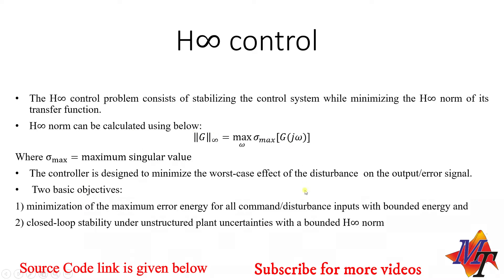For H-infinity control, the difference between H2 and H-infinity control is basically the norm used. In H2 we minimize the second norm of the transfer function, while in H-infinity we minimize the H-infinity norm, which is essentially the maximum or supremum value of the transfer function.